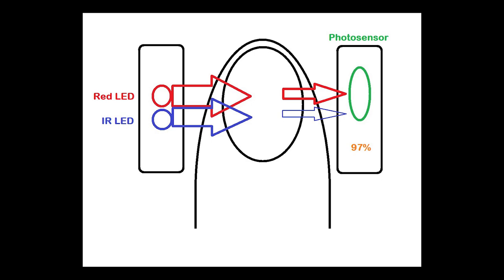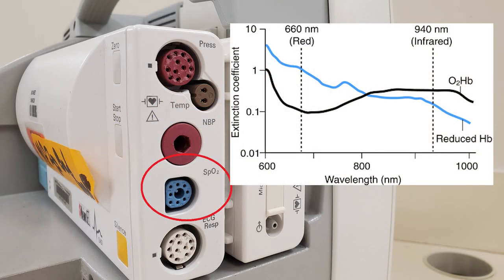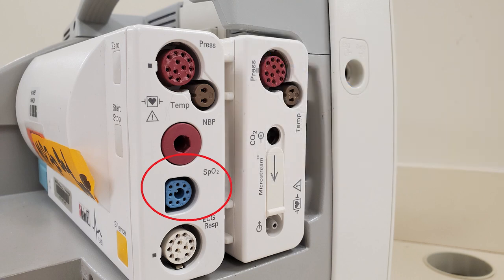The red light is absorbed by deoxygenated blood, and the infrared light is absorbed by oxygen-rich blood. If there's more red light that makes it through the tissue to the photosensor but less infrared light, then the computer will calculate a higher oxygen saturation level. Because of the checks and balances of using two different wavelengths of light to measure both oxygenated blood and venous blood, SpO2 monitors are extremely accurate.